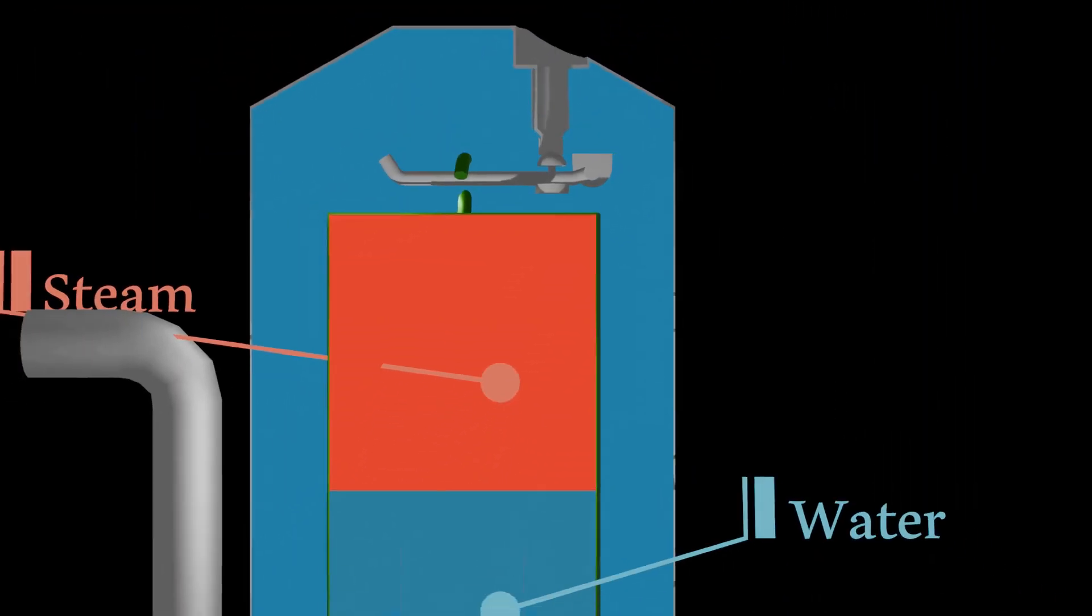As time passes, the steam loses its heat to the surrounding water. As a result, part of the steam condenses. When steam condenses, its volume decreases significantly and the bucket loses its buoyancy. So the valve starts to open. This will allow water to exit the trap.